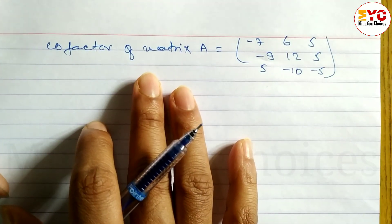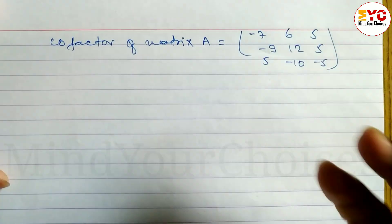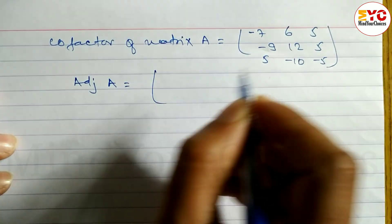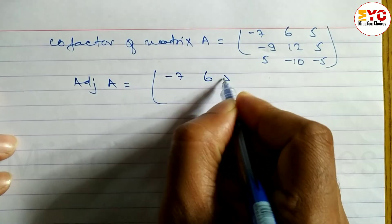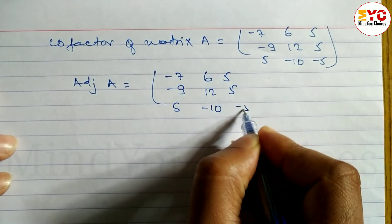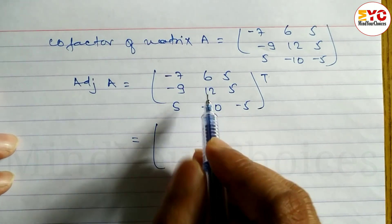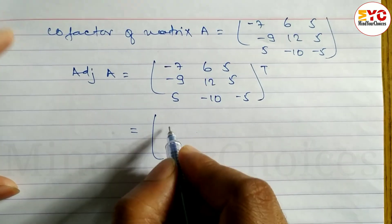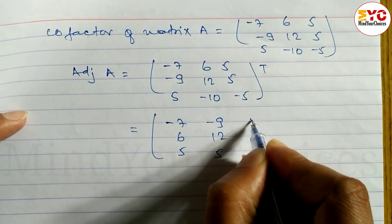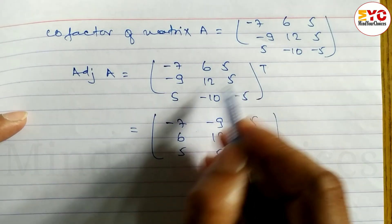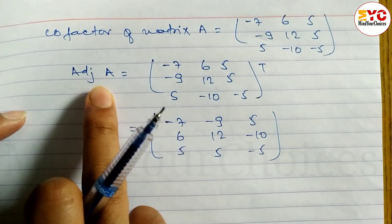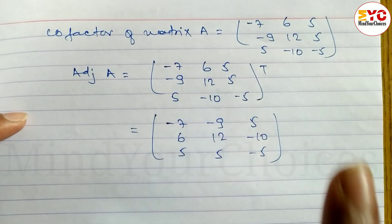Now we have to find adjoint A. To find the adjoint, we take the transpose of the cofactor matrix — just interchange rows and columns. So the adjoint A is: minus 7, minus 9, 5; 6, 12, minus 10; 5, 5, minus 5.